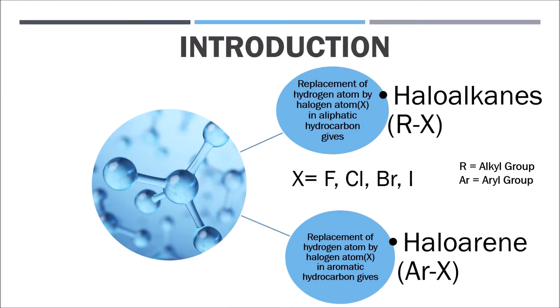Let me introduce what haloalkanes and haloarenes are. As you are aware, we studied aliphatic hydrocarbons and aromatic hydrocarbons, which comprise the benzene ring, in Class 11. When a halogen atom substitutes a hydrogen atom in these hydrocarbons, we get a corresponding haloalkane. The halo group is represented by the symbol X and can be a fluoro, chloro, bromo, or iodo atom.